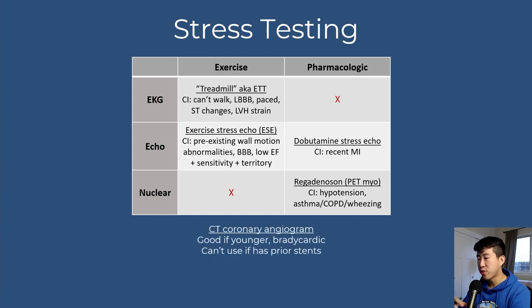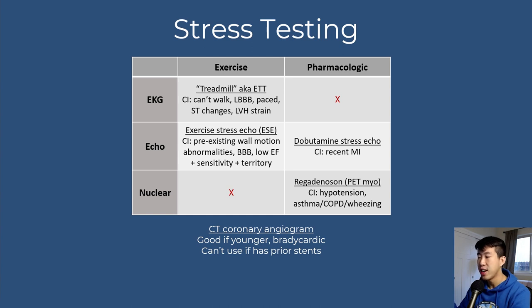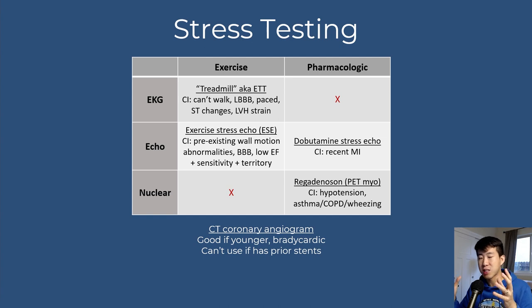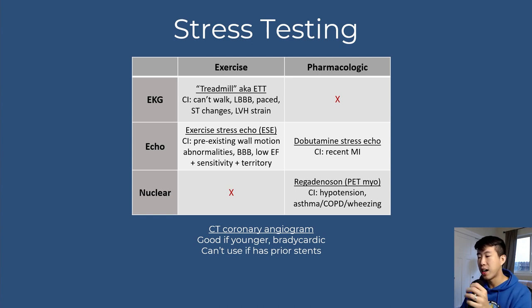CT coronary angiogram is an anatomical test offering rapid assessment for significant CAD or calcium lesions. It works best in younger patients with baseline bradycardia, as tachycardia creates artifact. Cannot be used if the patient has prior stents due to imaging artifacts.